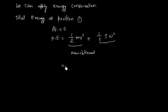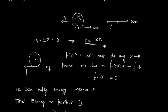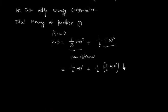For disk, I is one by two MR square. R is the radius of disk. And omega is V by R.